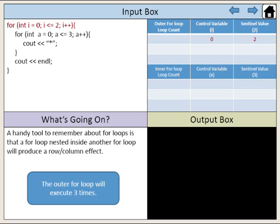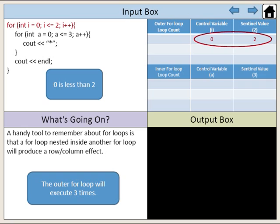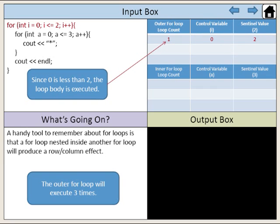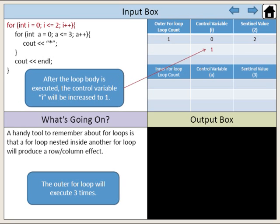In this example, the outer for loop will execute three times. The control variable i is initialized with the value of zero. Our sentinel value is two. The condition statement evaluates whether i is less than or equal to two. Zero is less than two, so the loop body is executed. After the loop body is executed, the control variable i will be increased to one.